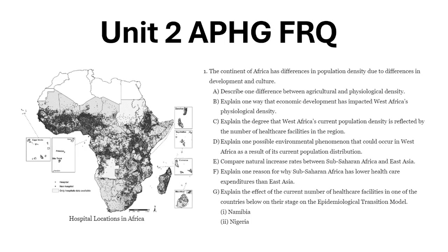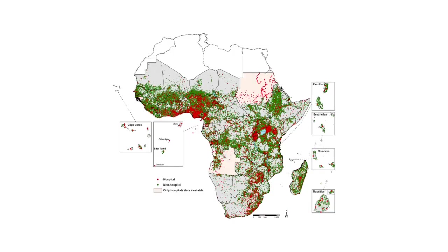Hey everyone, welcome back to another video. Today we're going to look at another FRQ for AP Human Geography. We're looking at Unit 2. We're going to be discussing population density, economic development, and environmental problems that can result from different population densities.